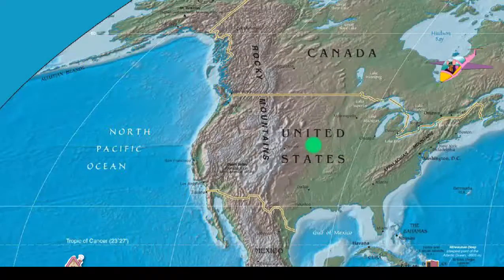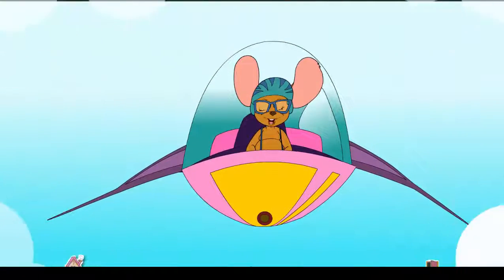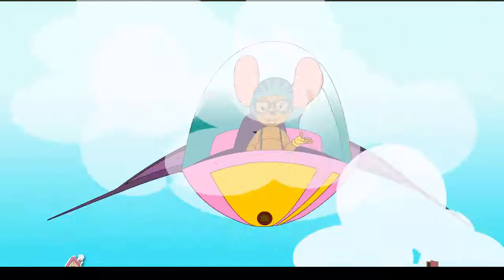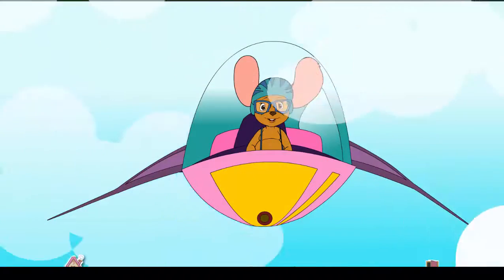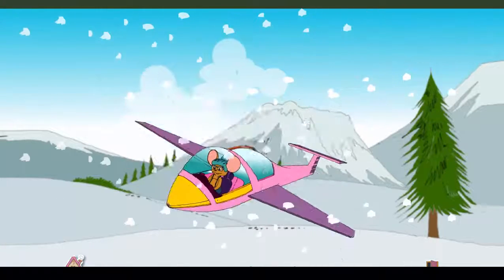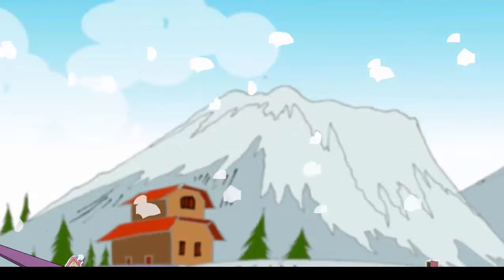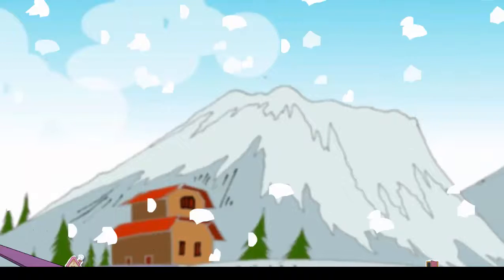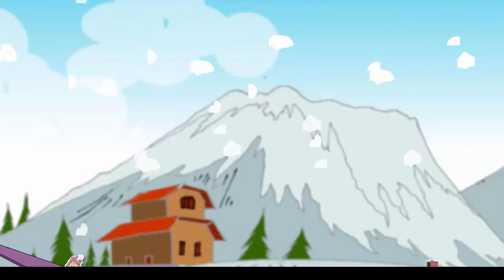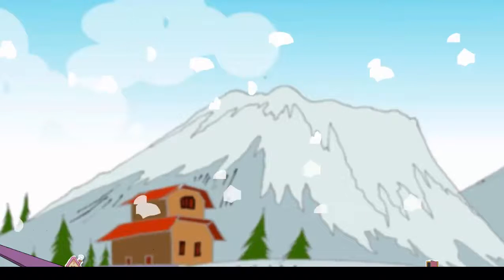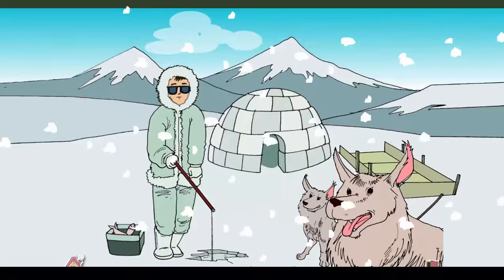We have landed in Alaska, a state in the United States of America. The weather here is very cold. This is like the winter season in my country. Look at that — it is a glacier. Glacier is made of ice and snow. Alaska has hundreds of glaciers.